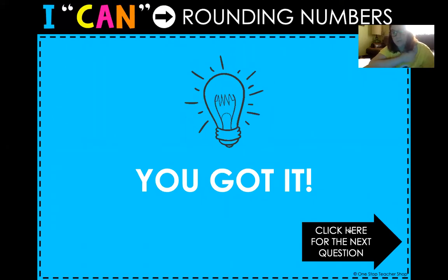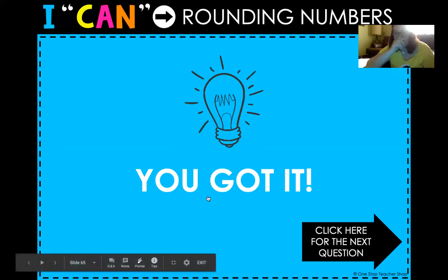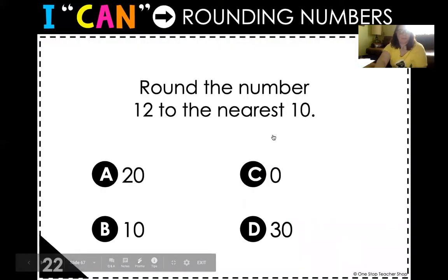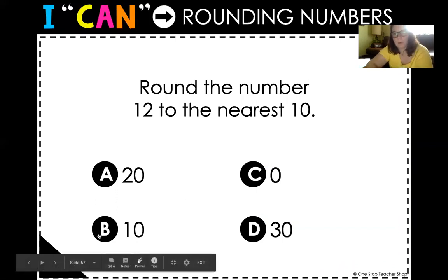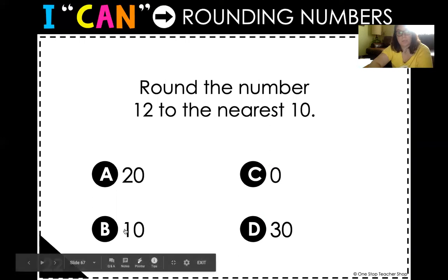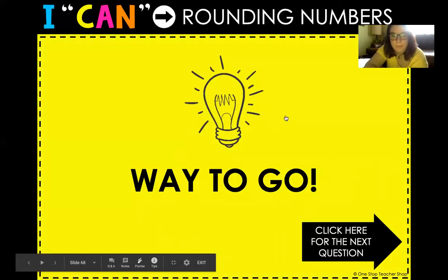It has to be in present mode for it to show there. And you can go ahead. So for number 22, it'll say round the number 12 to the nearest 10. Well, 12 would round to, what do you think, be 10? So for 22, you could write B. All right. I'm going to stop sharing now.